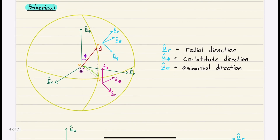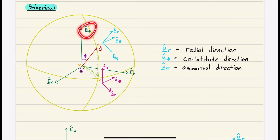Now let's move on to spherical. How do we define a point on a sphere? First we define the radius R of the sphere. Then we define a point on the sphere with two angles: theta, the azimuthal angle, and phi, the co-latitude angle, which is measured off the EZ direction. With radius R and these two angles, we've defined point P on the sphere.